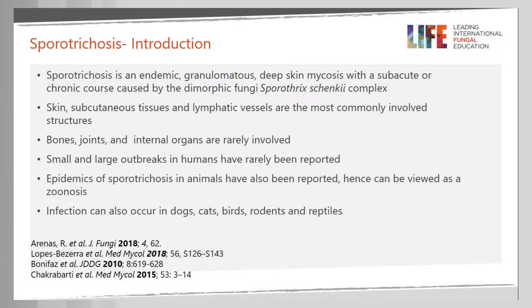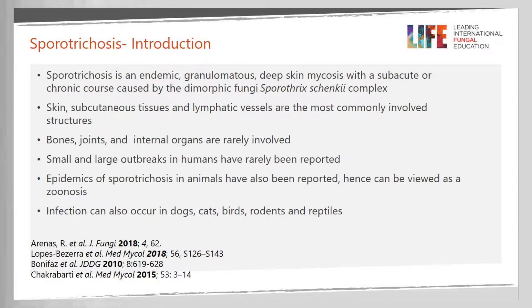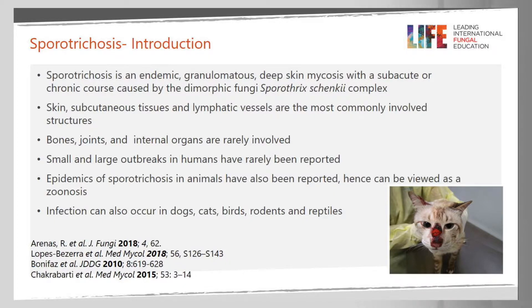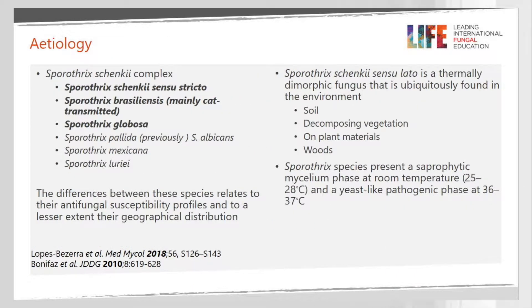But now, the most important outbreak is occurring in Brazil with a large number of cases. The epidemic of sporotrichosis in animals is reported as a zoonosis. Cats affected with this fungus show disseminated disease. Different animals can be affected, including dogs, cats, birds, and different rodents.